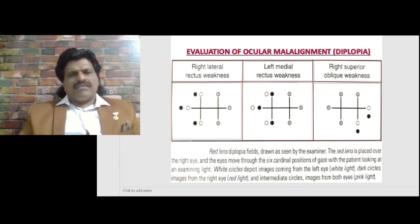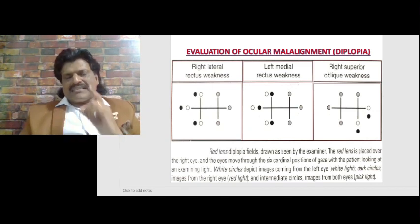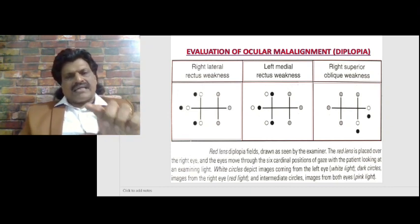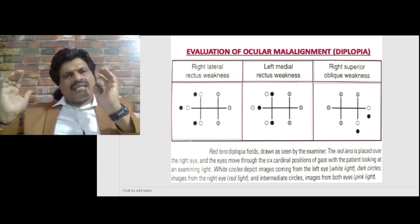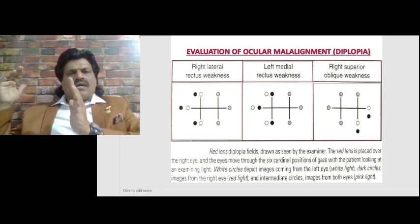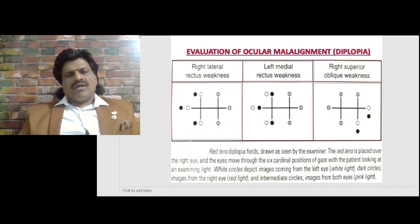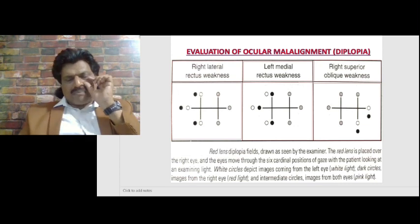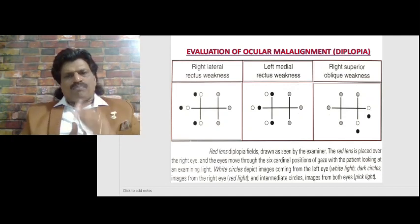Repeating the experiment for left medial rectus weakness: the red lens is again placed on the right eye. The examiner moves the eyes laterally, but this time the medial rectus — denoted by plain white circles — is affected. Since the medial rectus is weak, its images go more peripherally. In the second diagram, the red lens on the right eye appears normal, while the plain white circles representing the medial rectus move more and more peripherally, indicating medial rectus weakness.